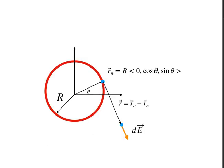What if I have a ring of charge and I want to find the electric field over here? I'm going to break this ring into pieces, and each piece is going to be a point on that ring. I can find the charge of that piece — it's the total charge divided by the number of pieces. I'll break this into theta sections, shifting by theta all the way around until I get back to where I started.